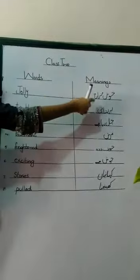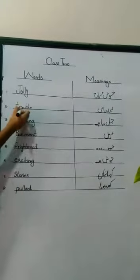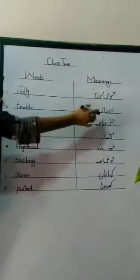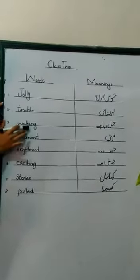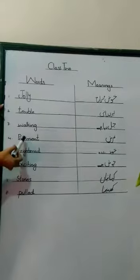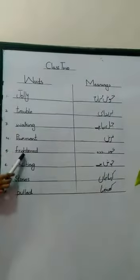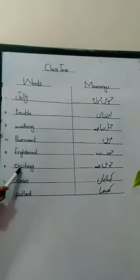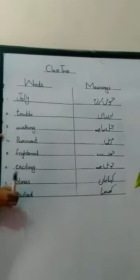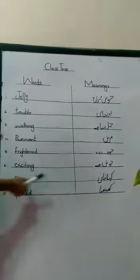First word: jolly — J-O-L-L-Y — means khushmizaj. Trouble — T-R-O-U-B-L-E — means pareshani. Walking — W-A-L-K-I-N-G — means chal raha hai. Pavement — P-A-V-E-M-E-N-T. Frightened — F-R-I-G-H-T-E-N-E-D — means dar. Exciting — E-X-C-I-T-I-N-G — means josh. Storage — S-T-O-R-I-E-S — means pareshaniyaan.